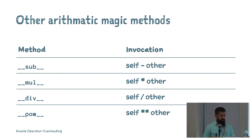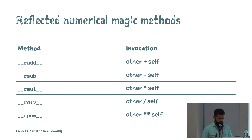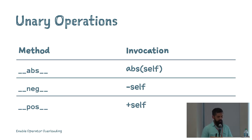There are many other arithmetic magic methods. Dunder sub is for the subtraction operator; similarly dunder mul, dunder div, and dunder pow for the power operator. If you want to define behaviors for these arithmetic operators with swapped parameters, you use the reflected numerical magic methods — there's an equivalent reflected method for each binary arithmetic method. You can also use unary methods to define behavior for unary operators, such as when the absolute function is used or when an object is prefixed with a plus or minus sign.